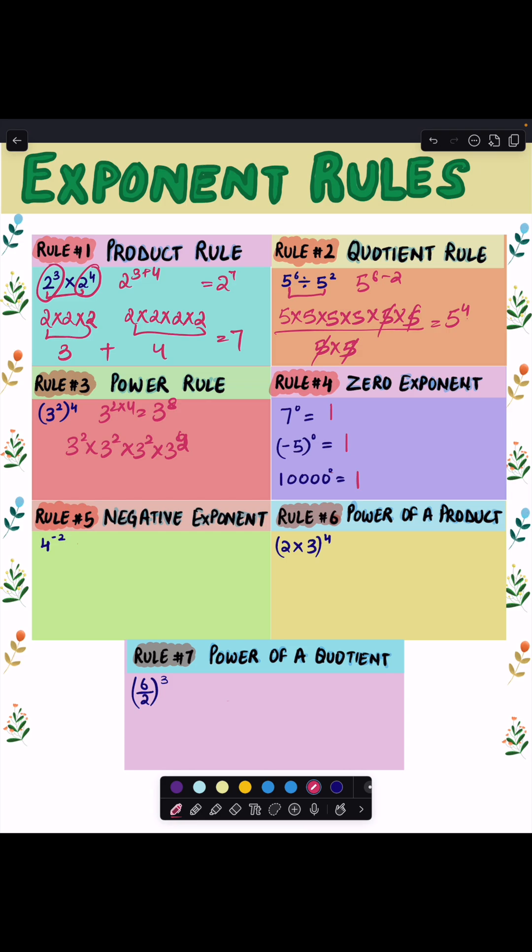Next rule is the negative exponent rule, which says when you see a negative exponent, move that number to the opposite side of the fraction line and make the exponent positive. So here we're gonna move 4 raised to power negative 2 to the opposite side, and it becomes 1 over 4 raised to power 2, and 1 over 16